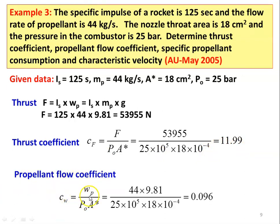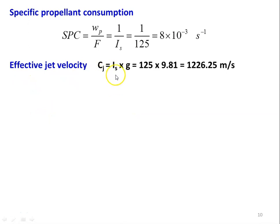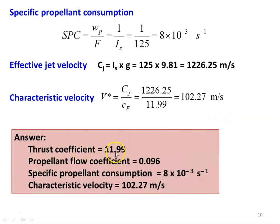Propellant flow coefficient Cw = Wp / (P₀ × A*) = (44 × 9.81) / (25×10⁵ × 18×10⁻⁴) = 0.096. Specific propellant consumption Spc = 1 / Is = 1 / 125 = 8 × 10⁻³ s⁻¹. Effective jet velocity Cj = Is × g = 125 × 9.81 = 1226.25 m/s. Characteristic velocity V* = Cj / Cf = 1226.25 / 11.99 = 102.27 m/s. Summary: thrust coefficient 11.99, flow coefficient 0.096, Spc 8×10⁻³ s⁻¹, characteristic velocity 102.27 m/s.